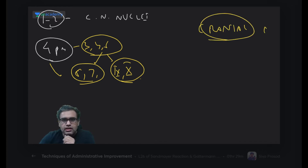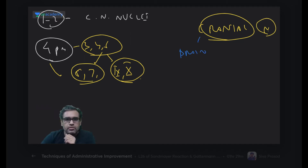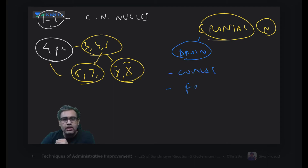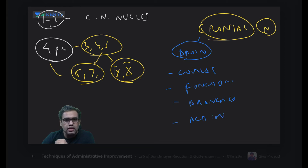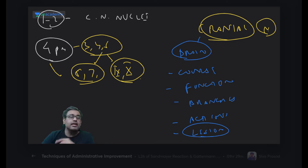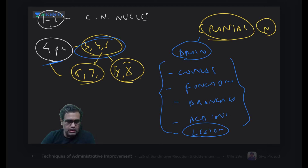In the cranial nerves we are going to discuss: from which part of the brain they come out, what is their course, what are their nuclear components, what is their function, what are their various branches, their various actions, and if there is any lesion, what are the features of that lesion. We'll start individual nerves today at 4 PM - nerves 3, 4, 6, and tomorrow the very important nerves 5, 7, 9, 10, 11.